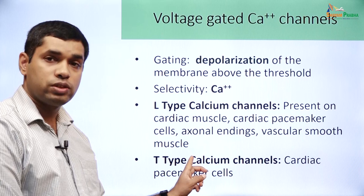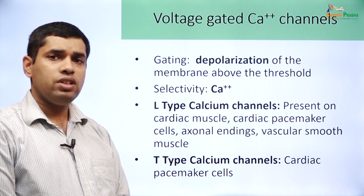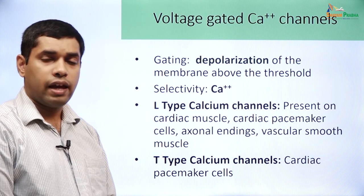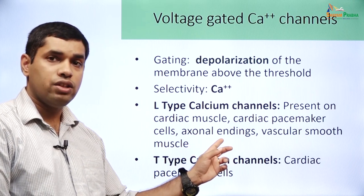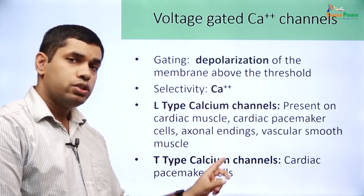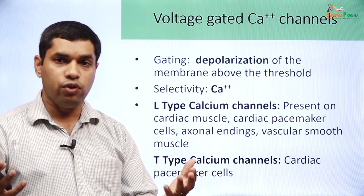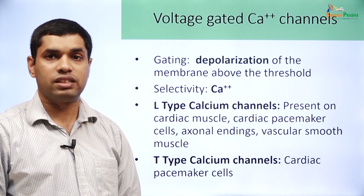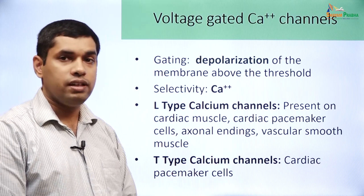The T-type calcium channels are present on cardiac pacemaker cells. Both the L-type and T-type calcium channels are important for the pacemaker action potential. The L-type calcium channels are present on axonal endings and represent a way for calcium from the extracellular fluid to enter the cell. Calcium that enters the cell is important for many cellular processes such as exocytosis, and this happens through the L-type calcium channels in many situations.